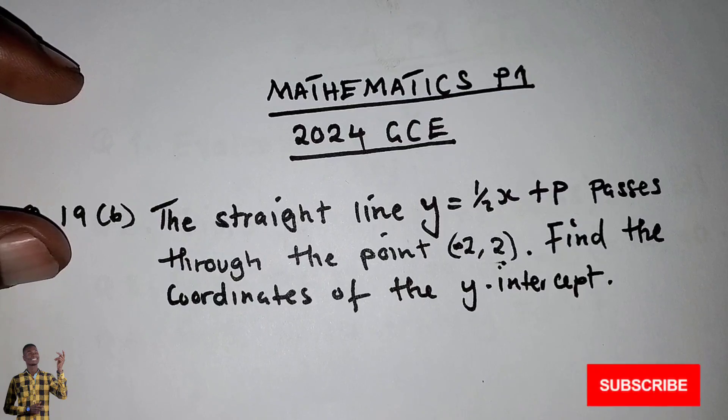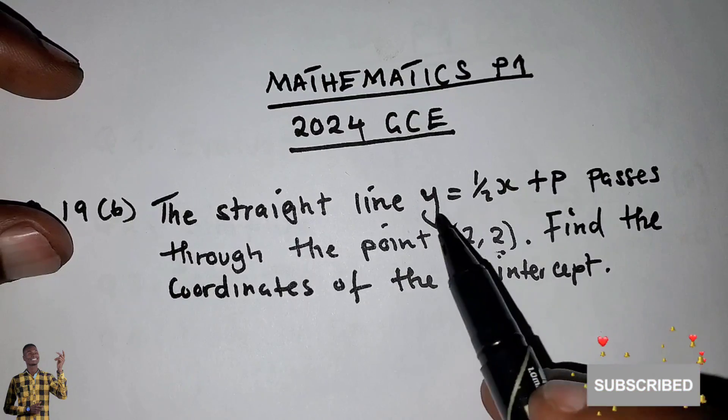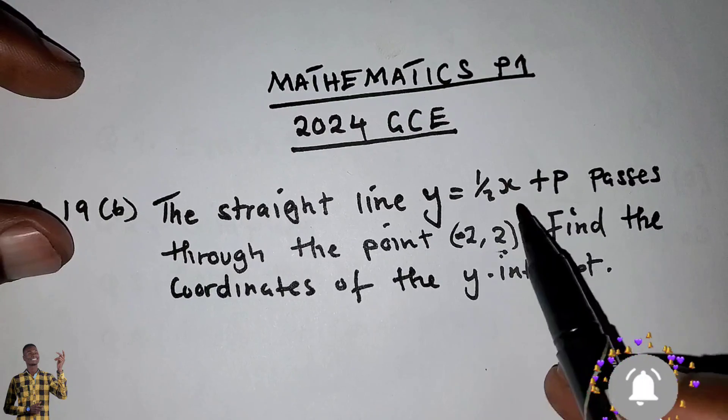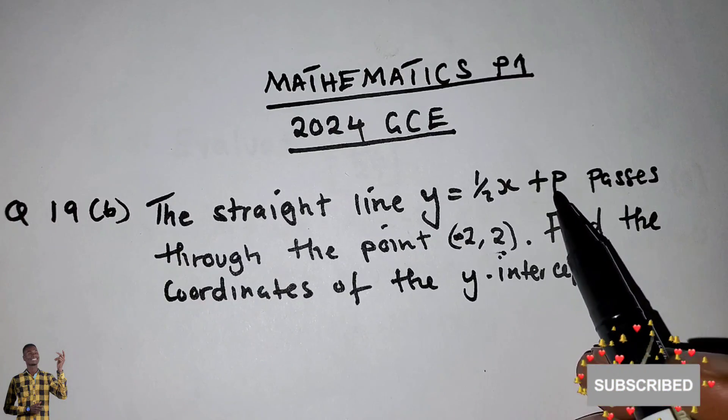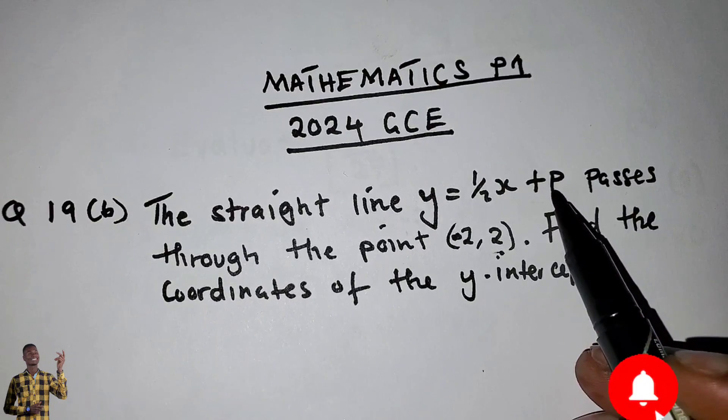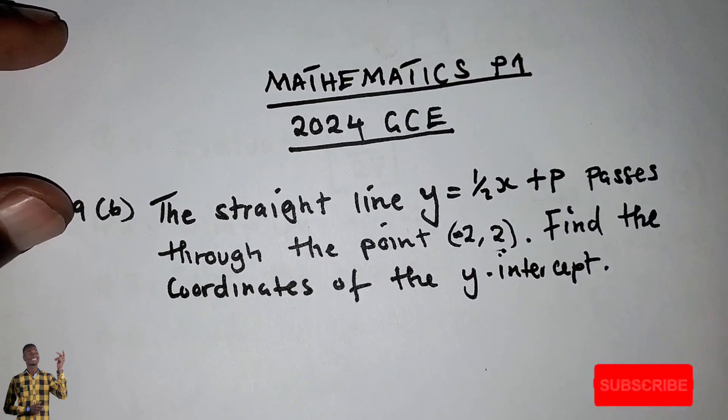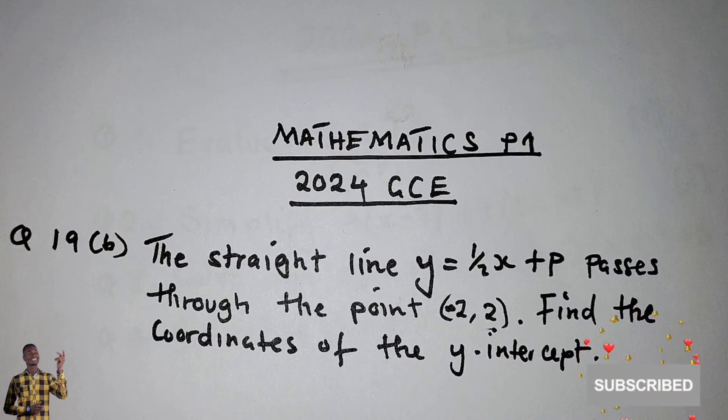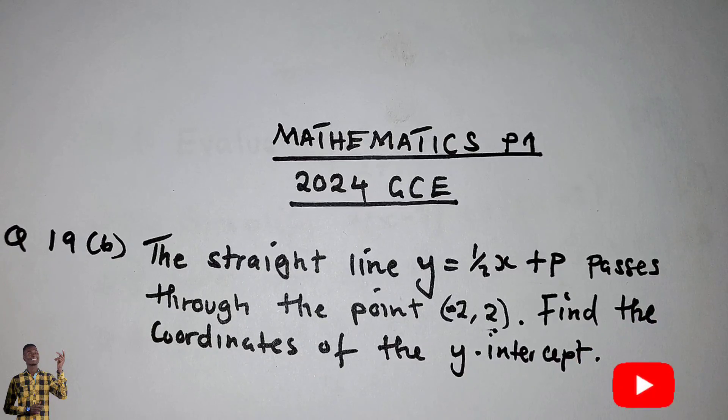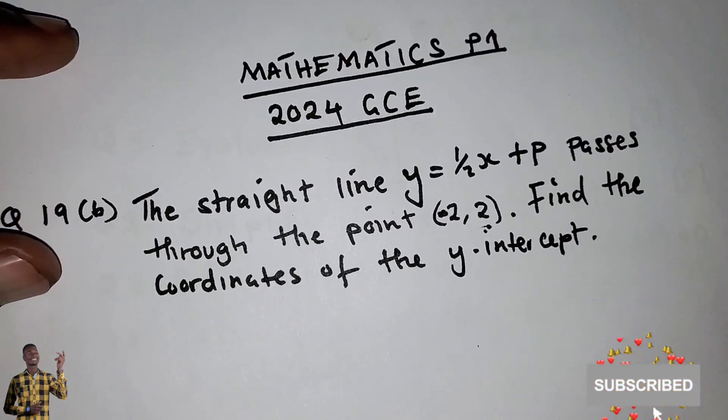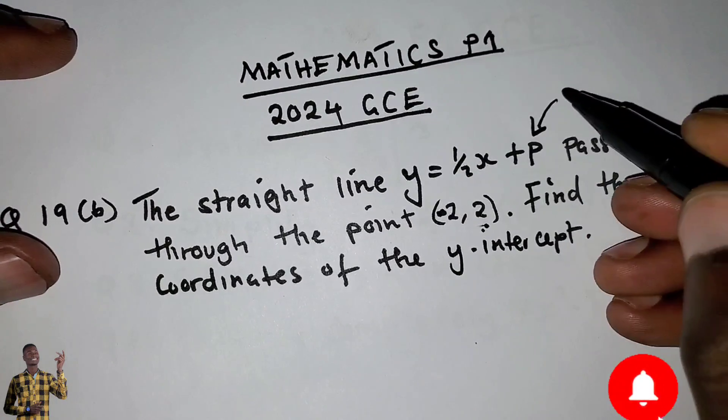This straight line equation has P as a constant number, and this constant is what is called the y-intercept. So this one is the y-intercept.